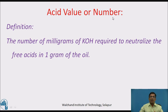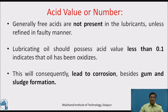Acid value, or acid number — definition: the number of milligrams of potassium hydroxide required to neutralize the free acids in one gram of an oil is known as the acid value or acid number. Generally, free acids are not present in lubricants unless refined in a faulty manner. Lubricating oil should possess an acid value less than 0.1; a higher value indicates that the oil has been oxidized, which will consequently lead to corrosion, besides gum and sludge formation.